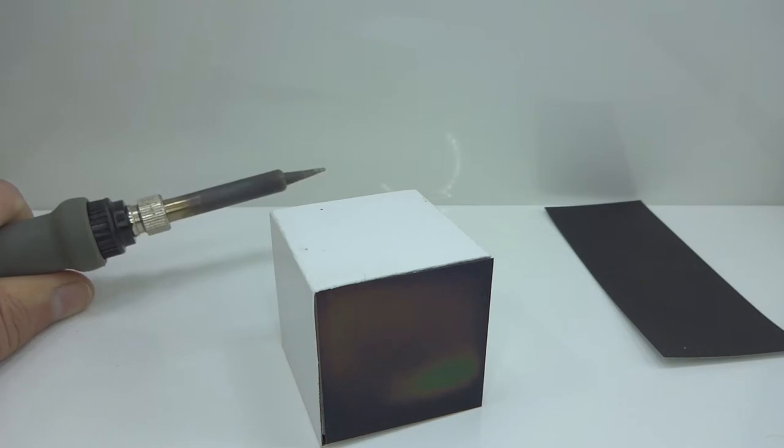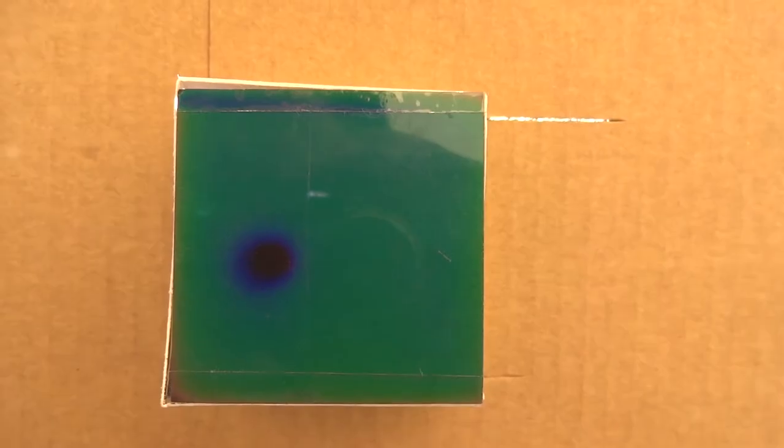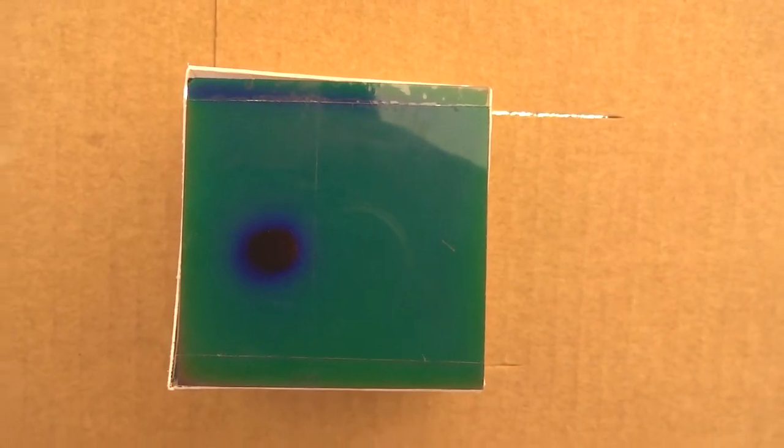This LCD film seems to produce a faster, but somewhat blurrier image compared to the iPhone case. This may be because the film conducts heat, spreading the image out as it forms. Here is an image of the sun.